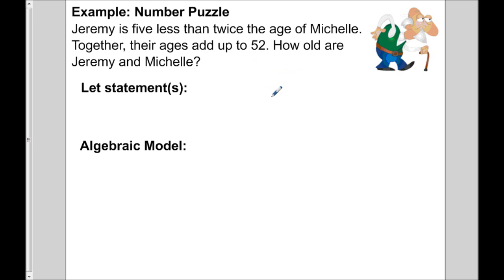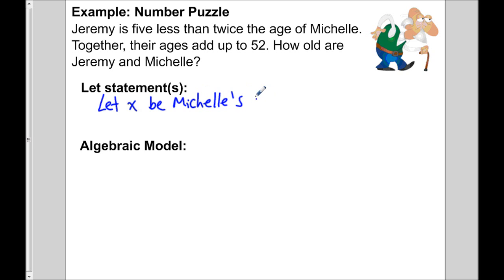Jeremy is five less than twice the age of Michelle. Together, their ages add up to 52. How old are Jeremy and Michelle? When we start questions like this, we need let statements. Let x be Michelle's age. We're making Michelle x because Jeremy's age is being compared to Michelle's. So if Michelle's age is x, Jeremy is five less than twice Michelle's age — that's 2x minus 5. So Jeremy's age is 2x minus 5.